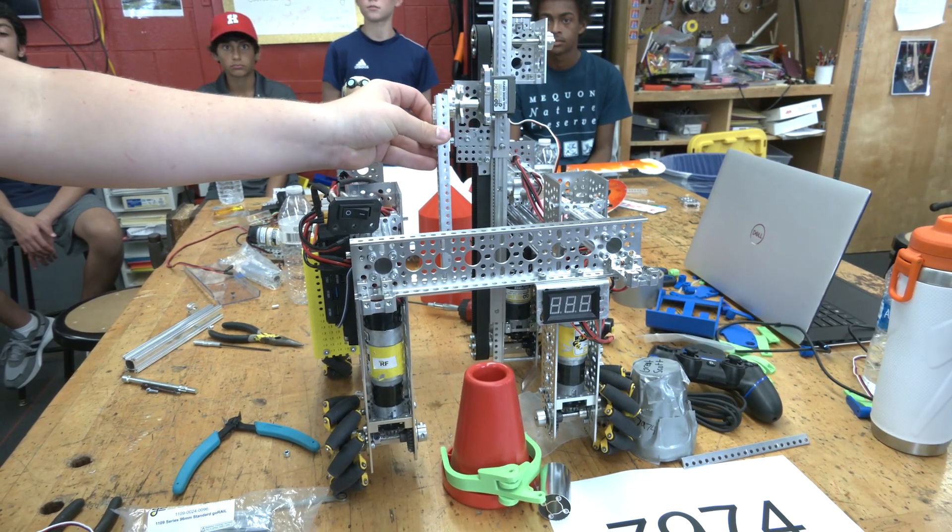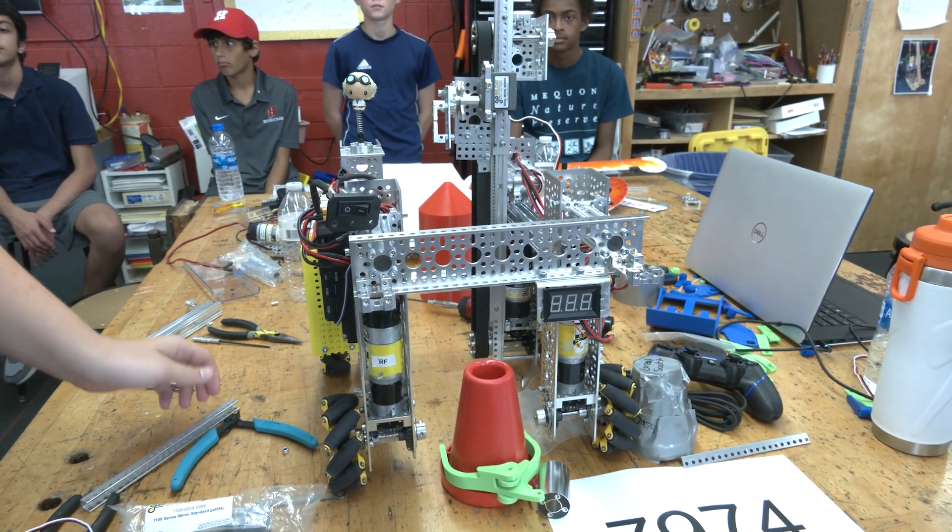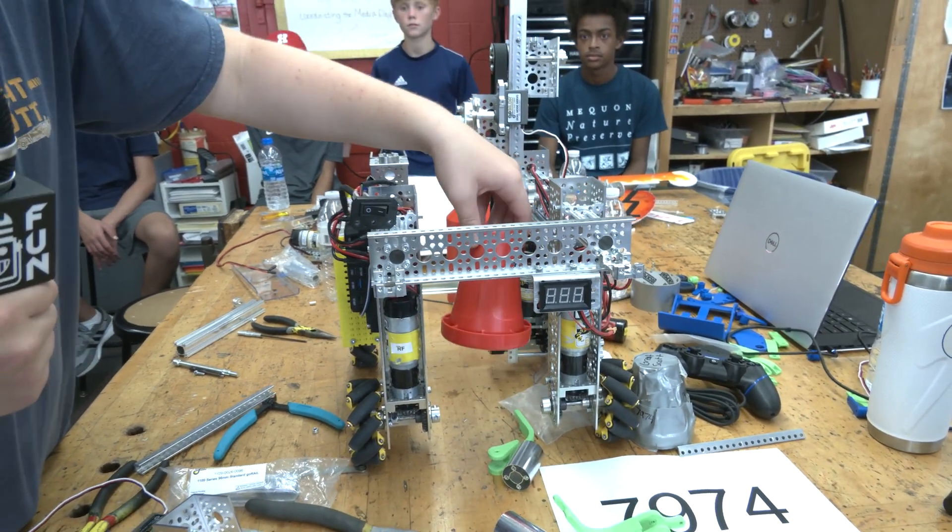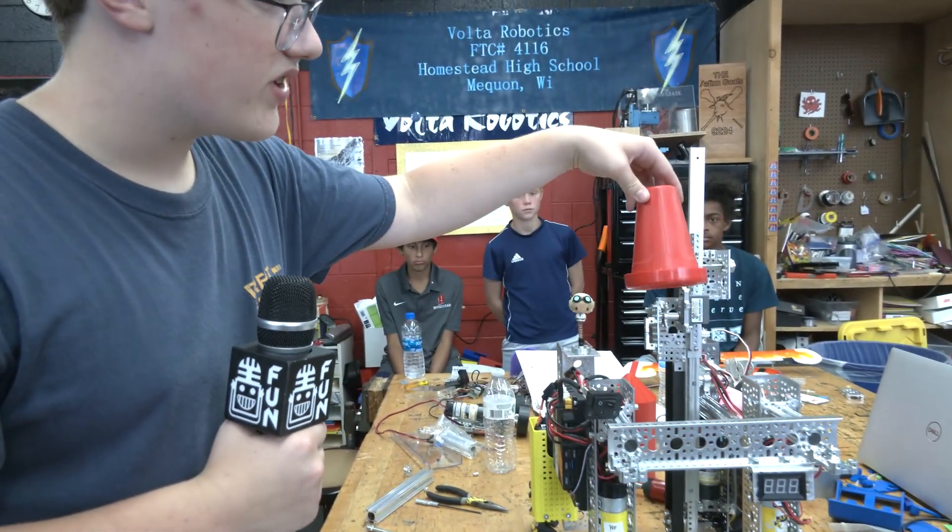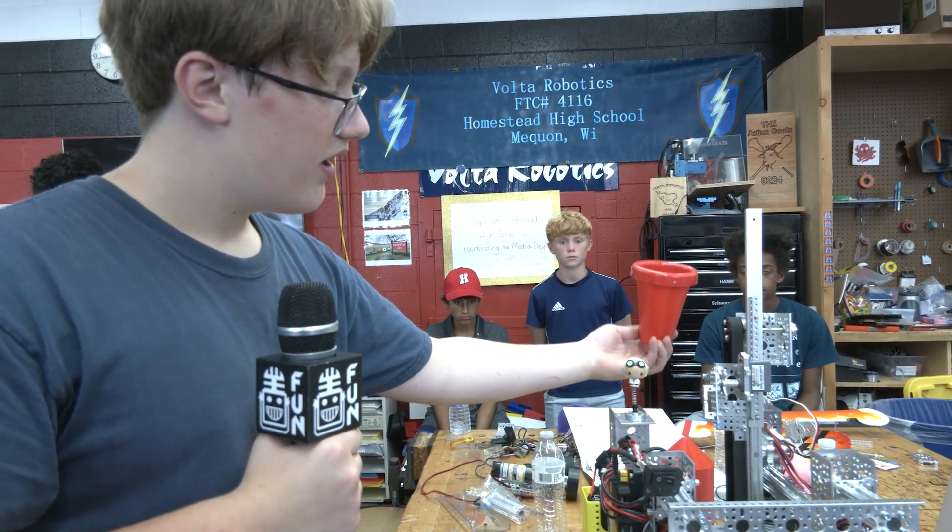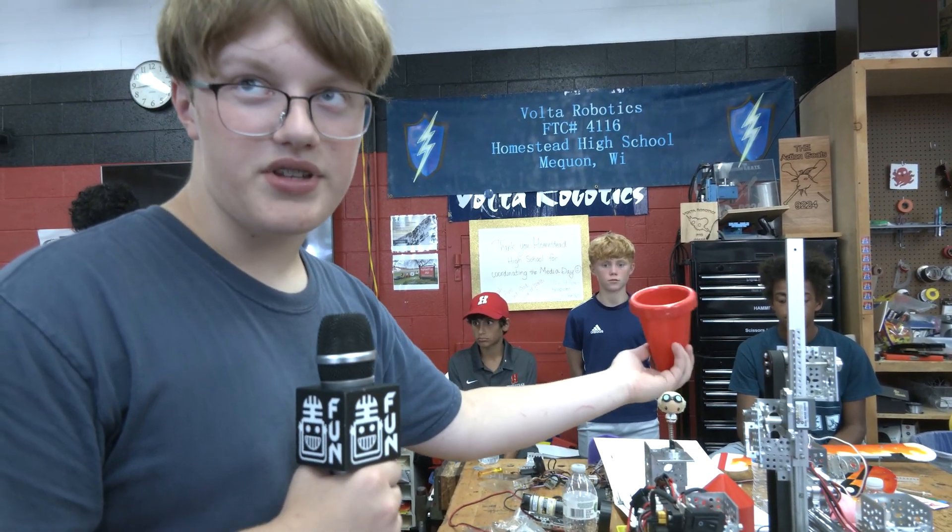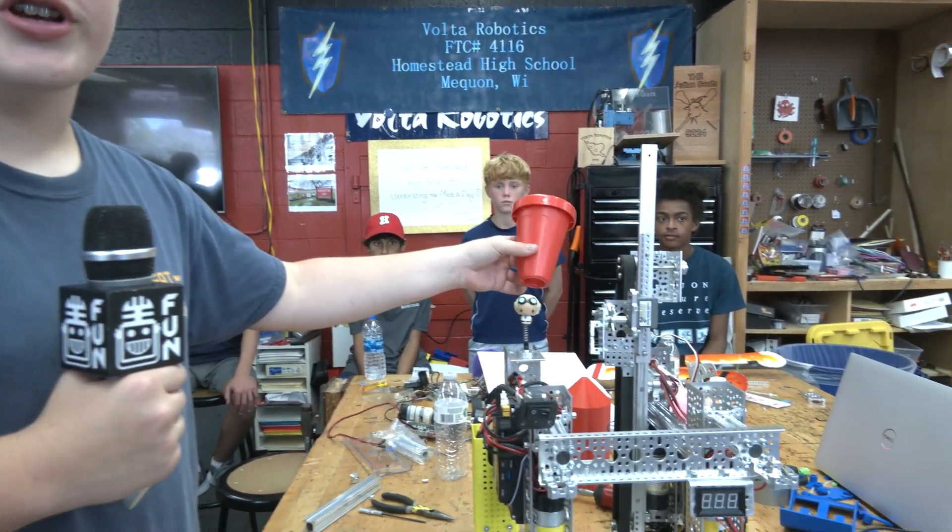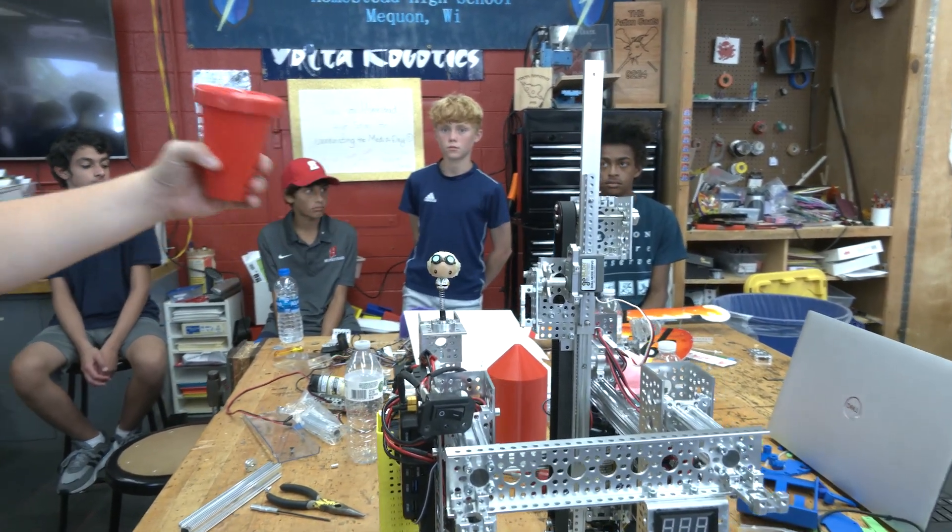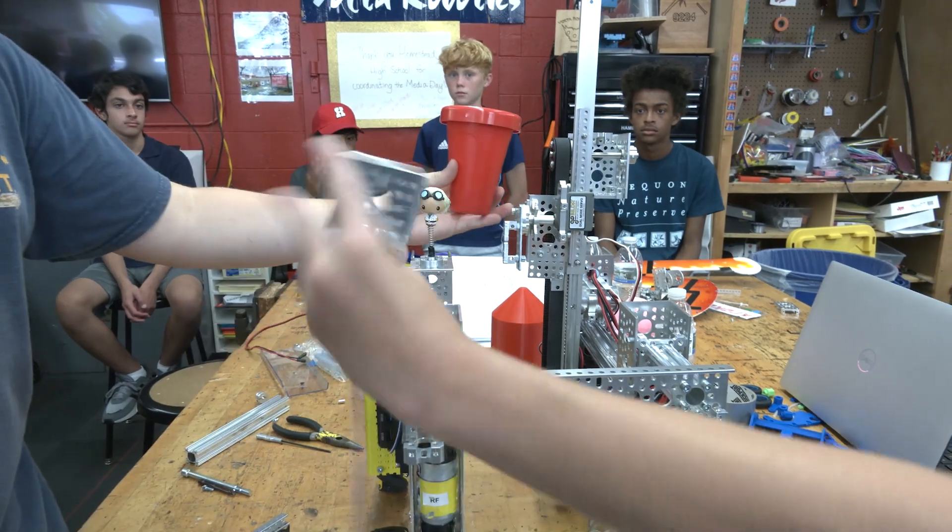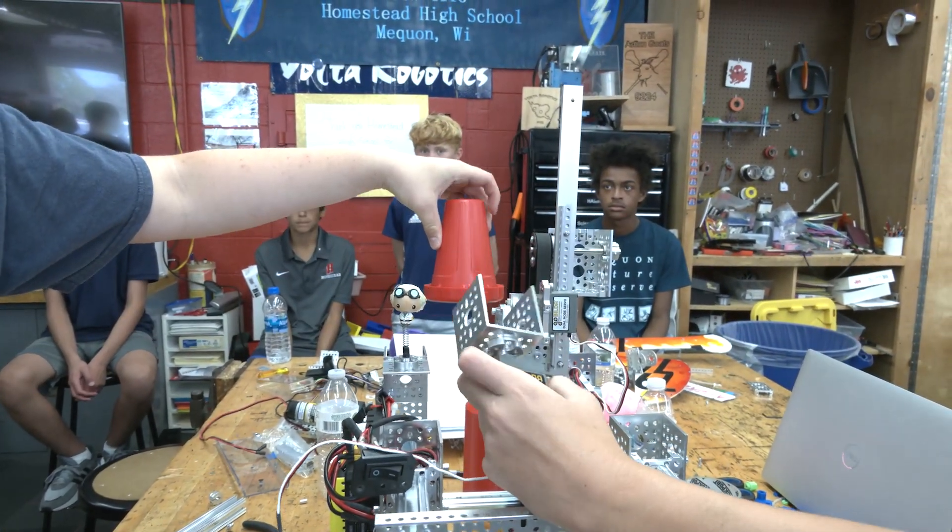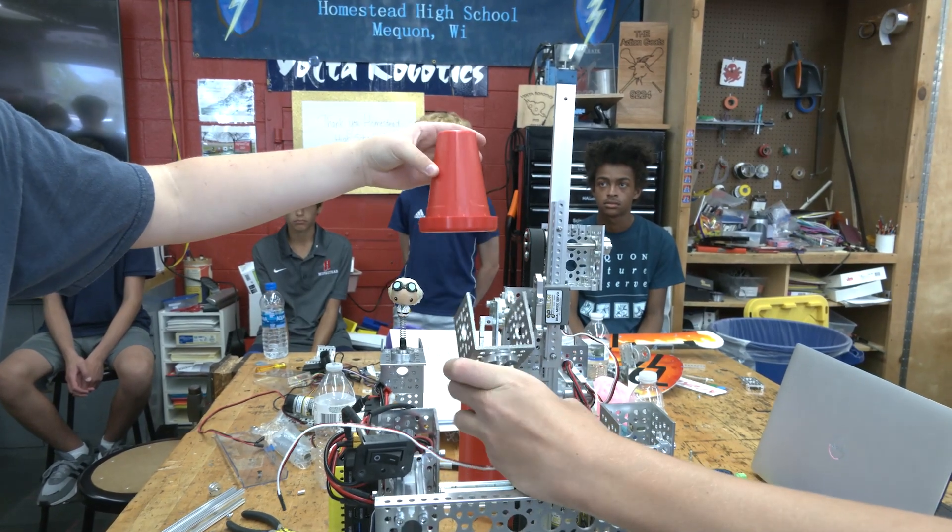We have it mounted on a servo which will be mounted to this section specifically here but is also mounted lower with this beam. Now what will happen is one issue that we ran into is when the claw is holding the cone and we want to raise it up and bring it over, it'll end up being upside down. Now according to game manual 2 that's not a valid strategy so what we have built is a system that takes the claw and rotates the entire mechanism to make it aligned to go on the rods.